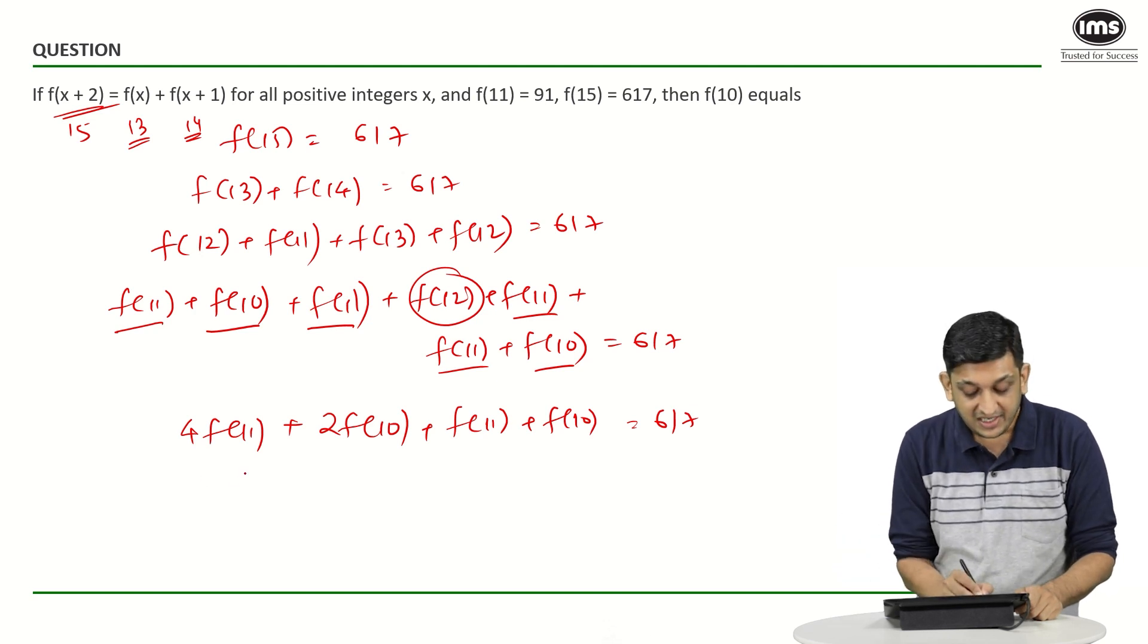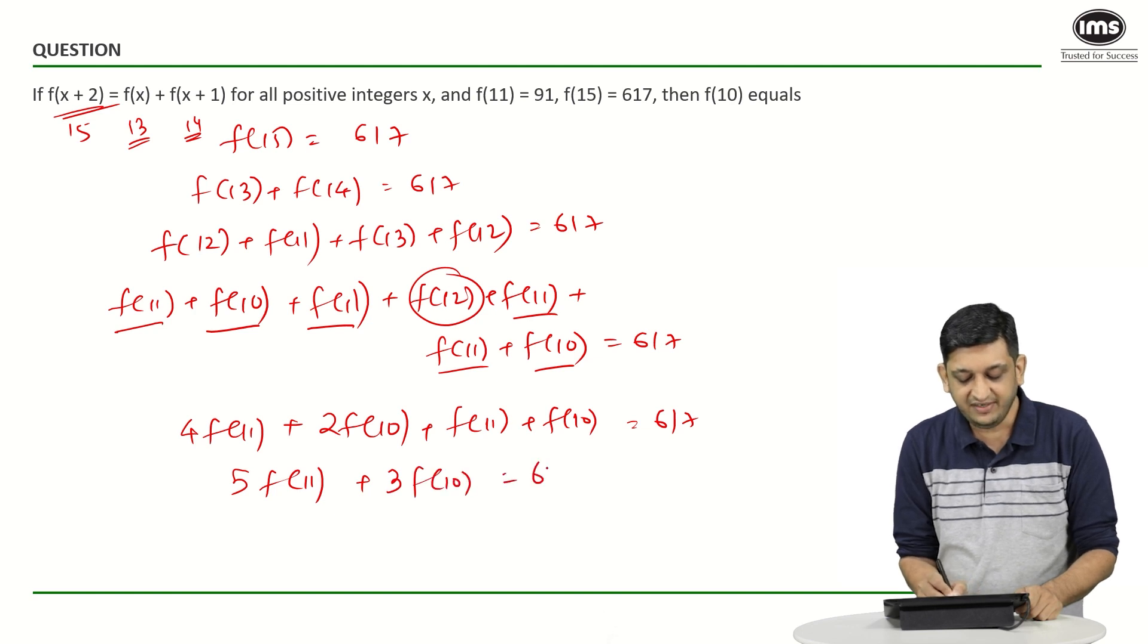What are we going to get? We are going to get 5 times f(11) plus 3 times f(10) will be 617.